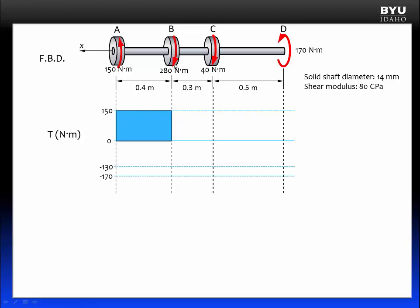At B, a negative torque is applied of magnitude 280 newton meters. So we will see a drop from 150 down 280 newton meters, and we will end up at negative 130 newton meters. So our internal torque from B to C is constant at negative 130 newton meters. Note that the difference between the two torques is the applied 280 newton meter torque at B.